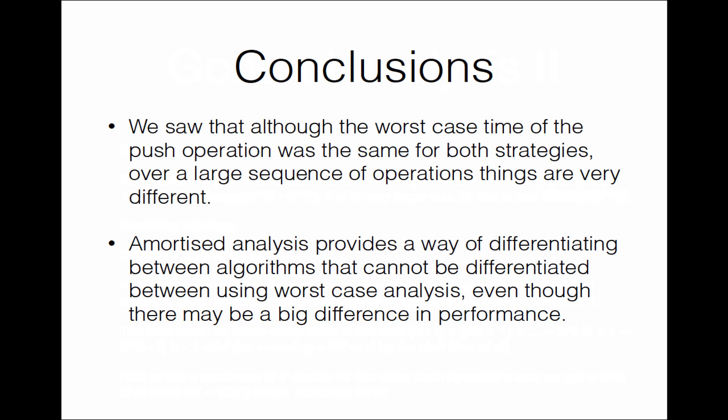In conclusion, although the worst-case time of the push operation is the same for both strategies — both can require an order-n push step when the stack grows — over a large sequence of operations the situation looks very different. This is very relevant because typically when we have a stack we are not doing one or two operations but a large number. Over a large sequence, the doubling strategy does much better — it is in fact linear in the number of operations, whereas the constant increase strategy is quadratic, and that can be a massive difference when the number of operations is in the millions or billions — a difference between seconds and hours.